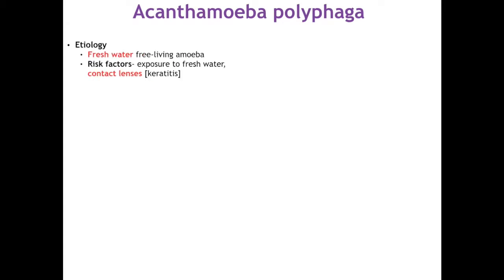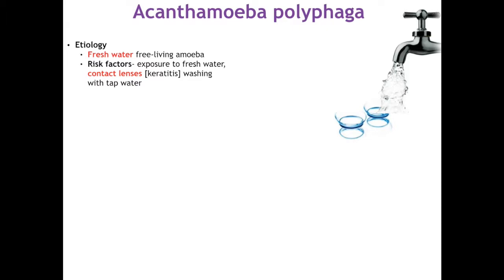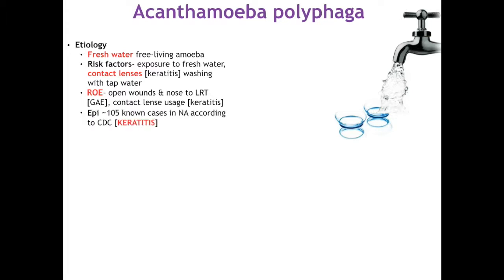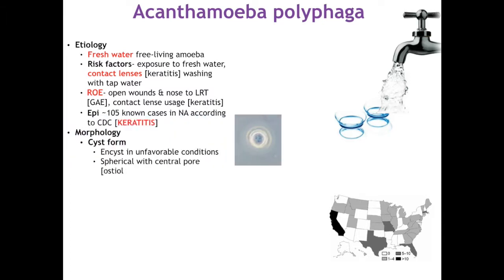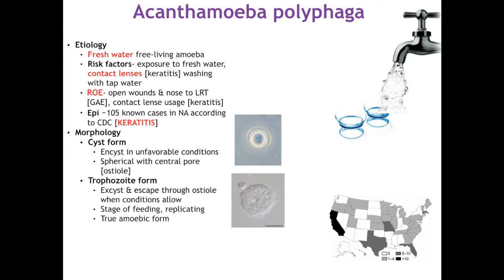Next is Acanthamoeba polyphaga, a freshwater free-living amoeba with two associated pathologies. Risk factors are exposure to fresh or tap water and contact lens use. The route of entry for GAE is through open wounds or via the nose to the lower respiratory tract; for keratitis, the risk factor is contact lens use or improper lens care. There are approximately 105 known cases of keratitis in North America, though it is found worldwide. Morphologically it is identical to Balamuthia — spherical cyst with a central ostium, with the trophozoite escaping through that pore to feed and replicate. Both forms are infectious in humans.